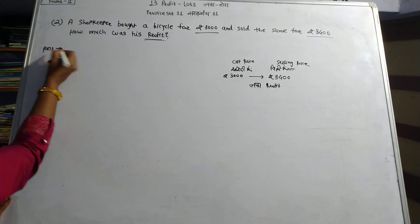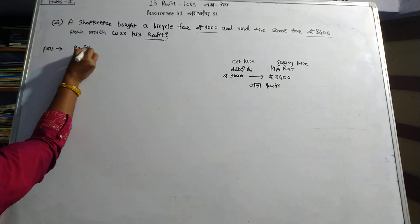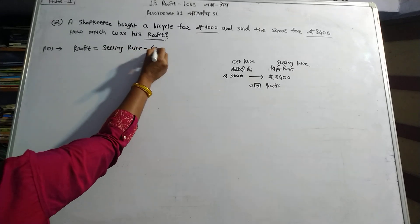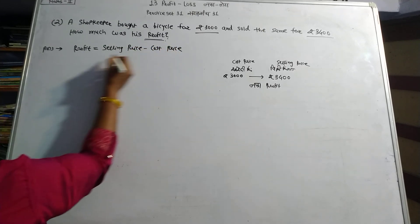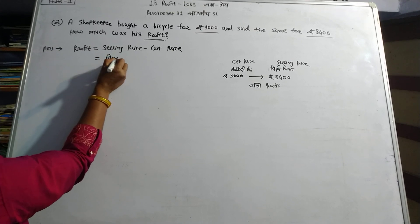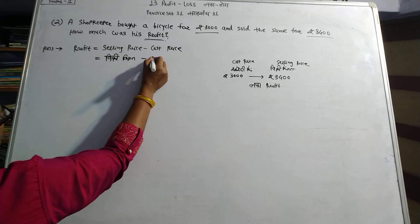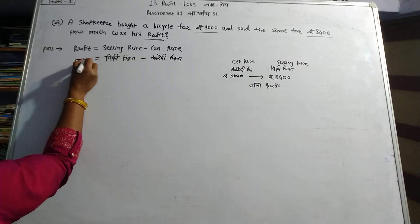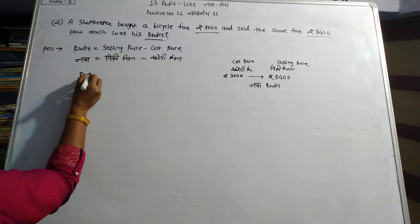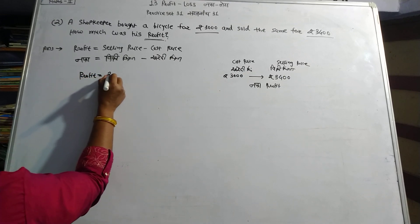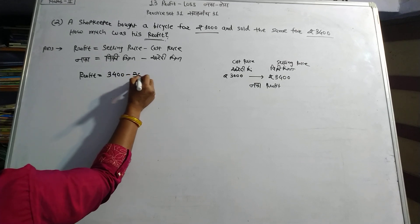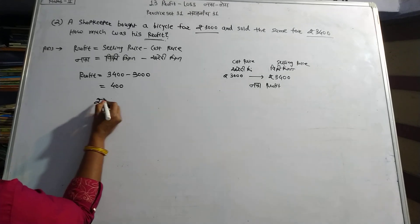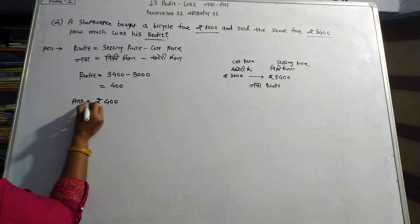Therefore, profit equals selling price minus cost price, which is 3,400 minus 3,000 equals 400 rupees. The answer is 400 rupees profit.